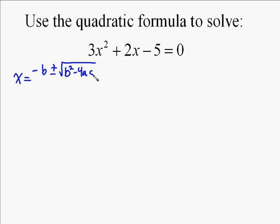The formula is negative b plus or minus the square root of b squared minus 4ac all over 2a. Sometimes people make up songs or whatever to memorize it, but you just need to figure out a way to memorize the quadratic formula.